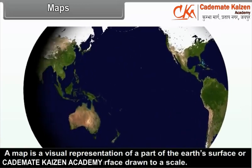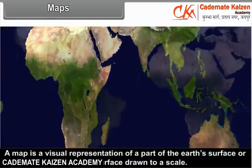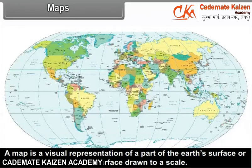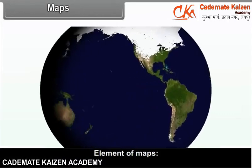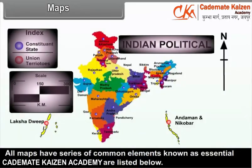A map is a visual representation of a part of the earth's surface or the whole earth on a flat surface drawn to a scale. All maps have a series of common elements known as essential components of the map.